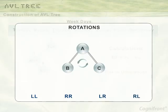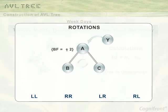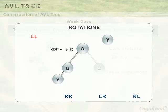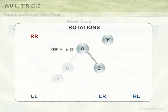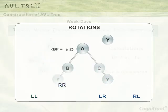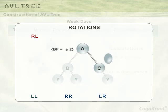These rotations are performed on the nearest ancestor A of the new node Y, and the balance factor of A should be plus 2 or minus 2. LL rotation is performed when a new node is inserted at the left side of the left subtree of A. RR is when new node Y is inserted in the right side of the right subtree of A. In LR, Y is inserted in the right side of the left subtree of A. RL rotation is performed when Y is inserted in the left side of the right subtree of A.